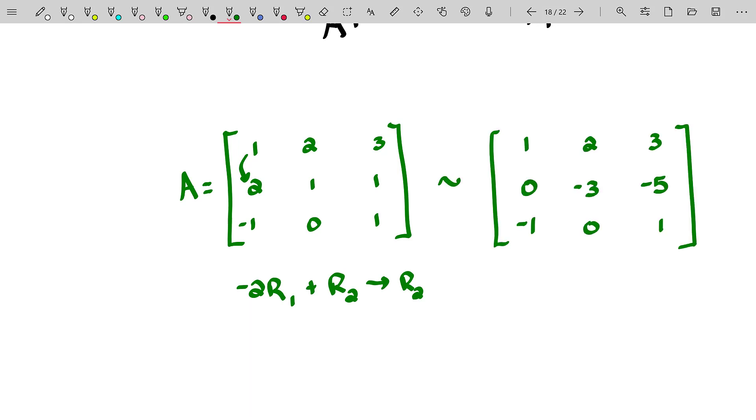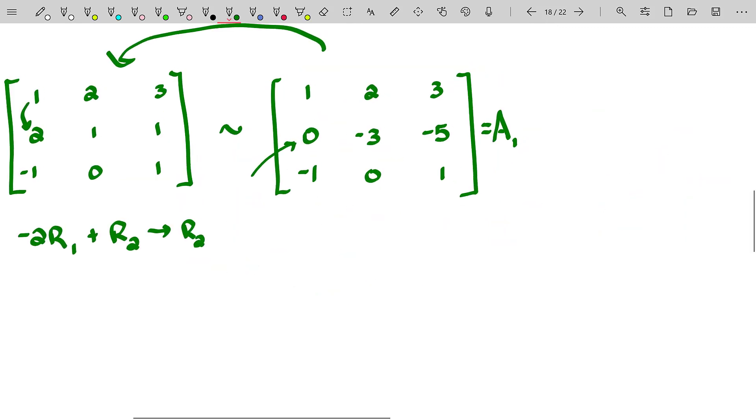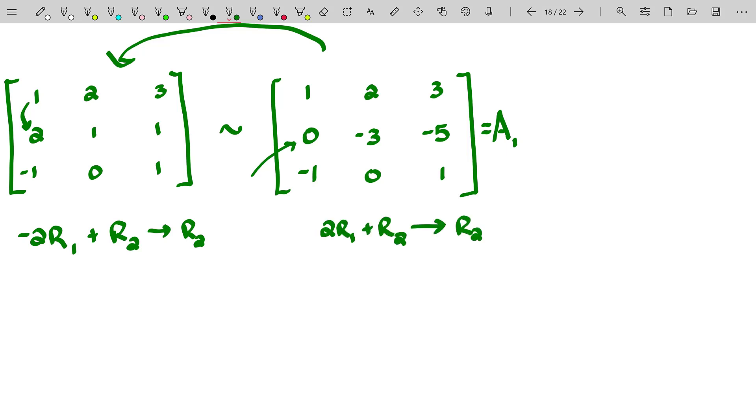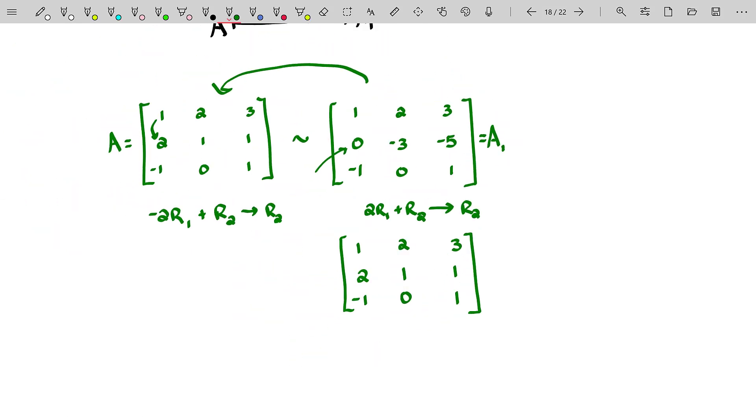Well, let's just see what our A sub 1, our row equivalent matrix is after that elementary row operation. All right, we get down to there. Now here's the deal. I want to get from this matrix, which I'll call A sub 1 just to align with everything we're doing. I want to get from that matrix back to the original matrix. How am I going to do that? Well, I would love for this entry here to become a positive two. One way to force it to become a positive two is to multiply row one by two, add it to row two to become the new row two.